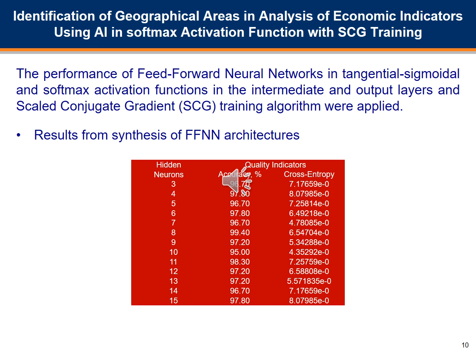The performance of feed-forward neural networks with tangent sigmoid and softmax activation functions in the hidden and output layers, and scaled conjugate gradient training, were applied. The analysis is based on evaluation of accuracy and cross-entropy criteria in the fixed range of 5 to 15 hidden neurons, with results of tracking their variations summarized. The leading indication is high levels of accuracy while seeking an architecture with the lowest possible cross-entropy, which determines better classification quality.